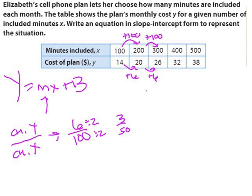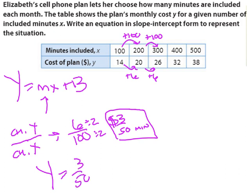So that means $3 for every 50 minutes included is the rate of change. Every time you spend $3, you're going to get 50 more minutes. Because my change in y was the cost of the plan, that represented dollars. 50 represents minutes. So there's my rate of change, there's my slope, 3 over 50. Now I'm going to include that, 3 over 50x.